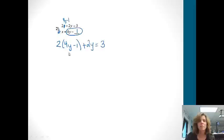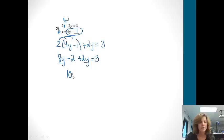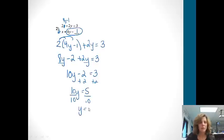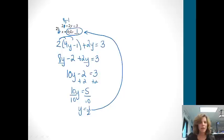Now it's just a solving problem. We distribute: 8y minus 2 plus 2y equals 3. Combining like terms: 10y minus 2 equals 3. Add 2 to both sides to get 10y equals 5, then divide by 10 to get y equals one-half. We go back into the starred equation: 4 times one-half is 2, and 2 minus 1 is 1, so x equals 1. Our point of intersection is (1, one-half).